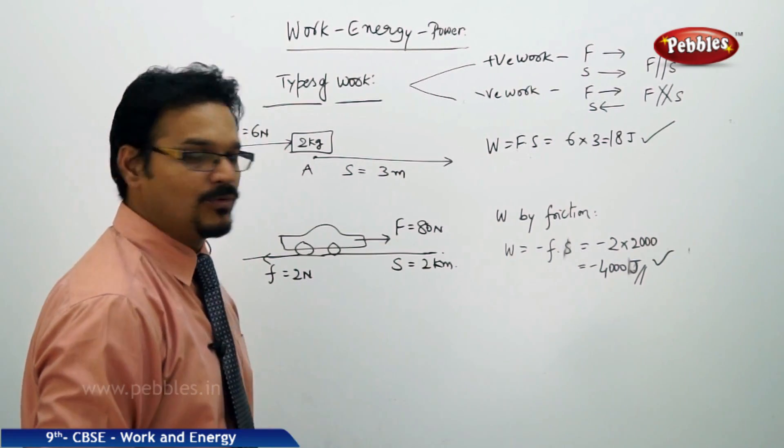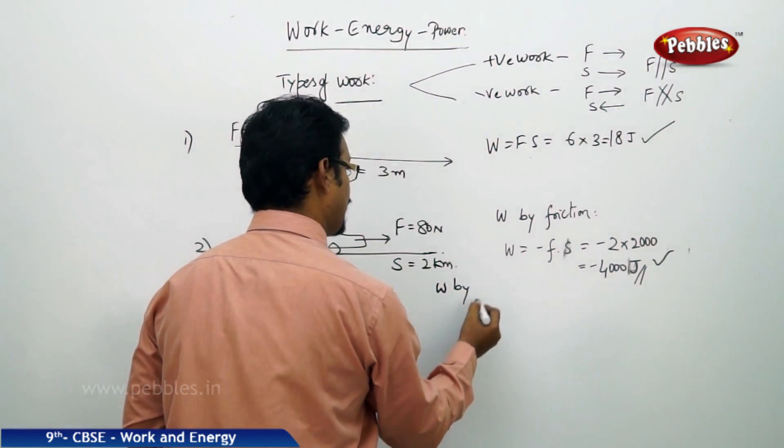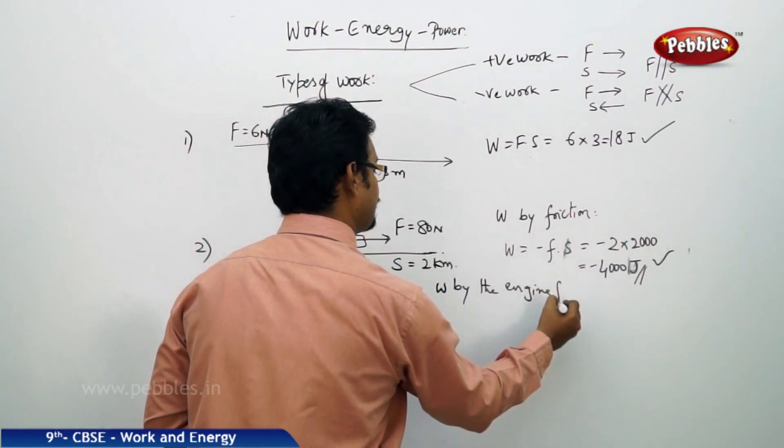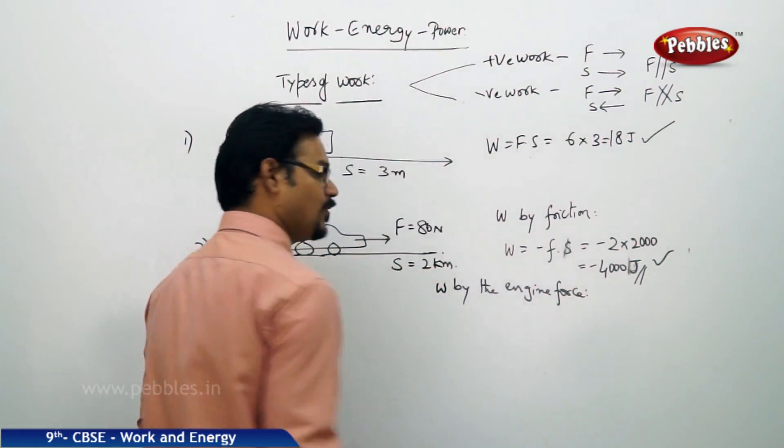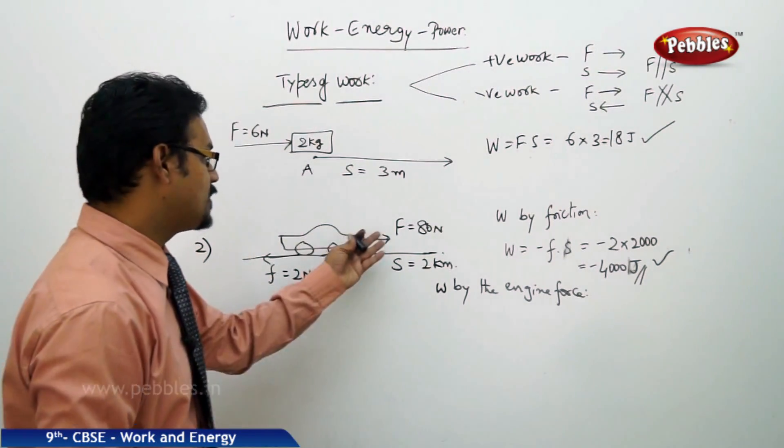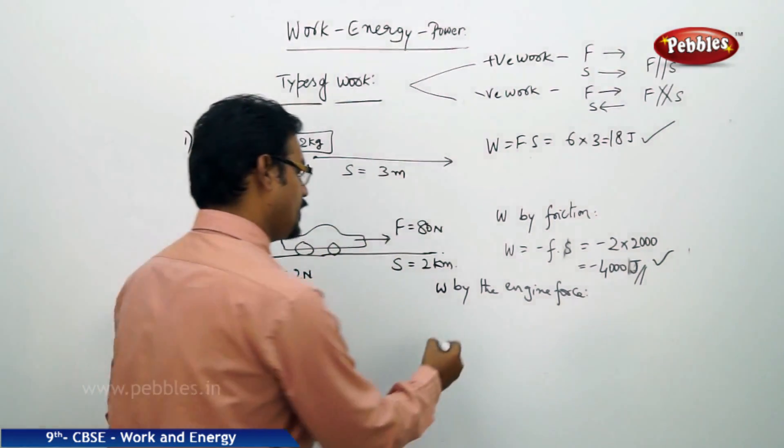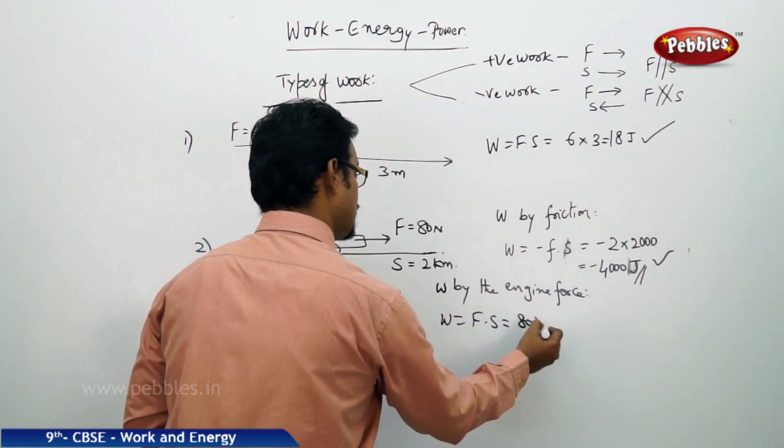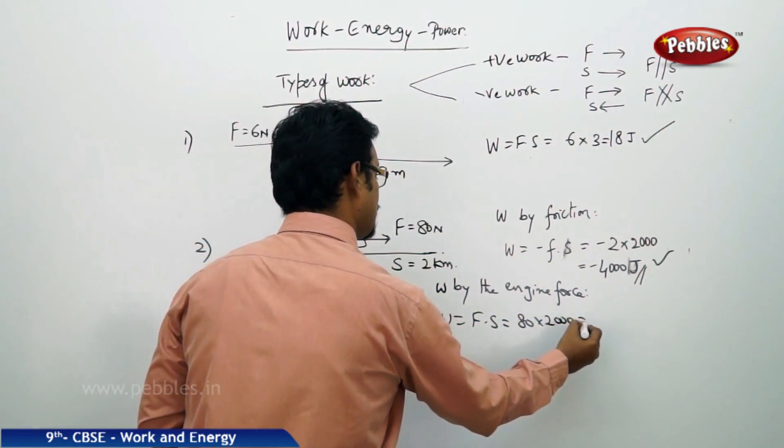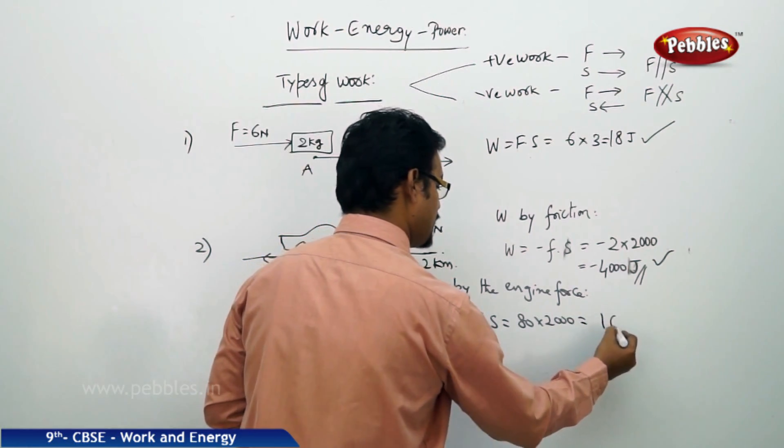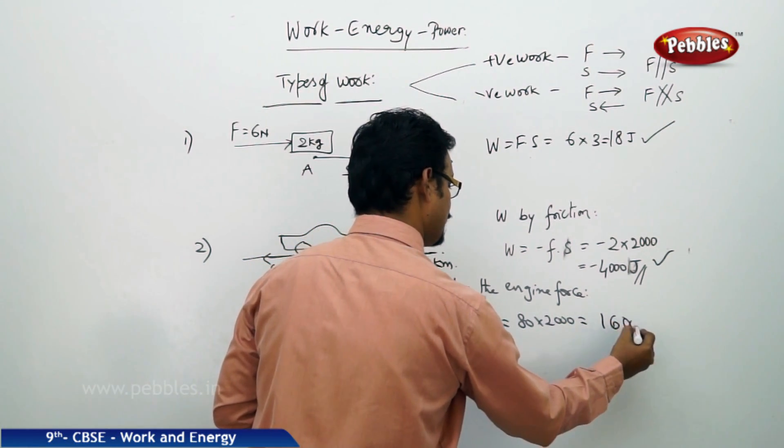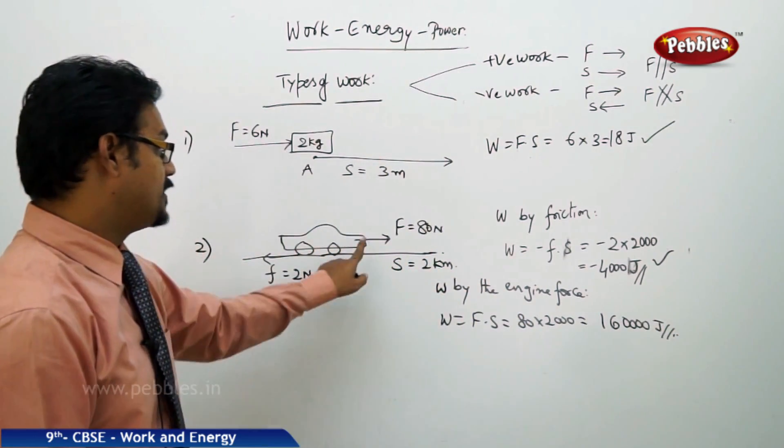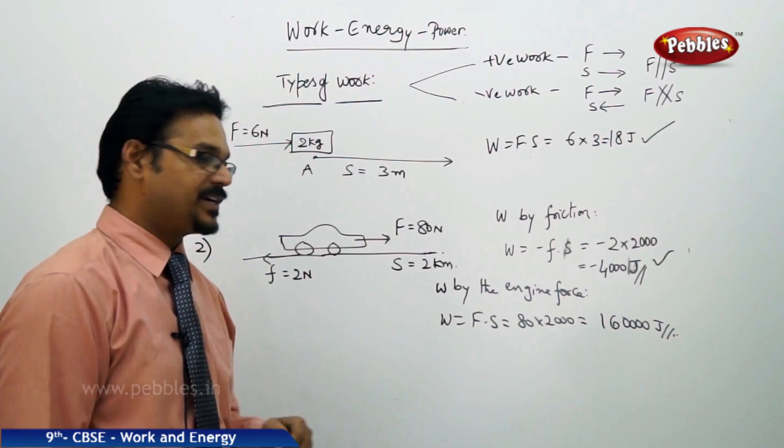To add more, if you ask what is the work done by the engine force? So engine force is 80 Newton. So therefore W equals to F into S, which is 80 into 2000 meters. So this is almost 16 four zeros joules. It is a positive work, because this arrow, both are moving in the same direction.